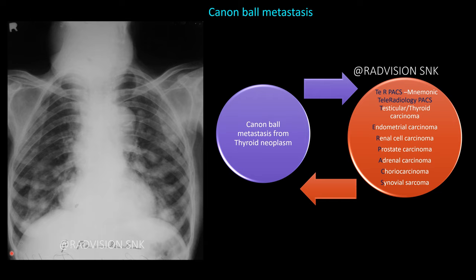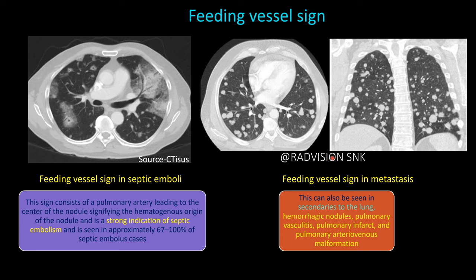Next case: multiple nodular lesions scattered in bilateral lung fields — these are called cannonball metastases. There is also a thyroid mass with calcifications, indicating thyroid malignancy with cannonball metastasis. Remember the mnemonic 'Tele Radiology PACS': T for testicular and thyroid carcinoma, E for endometrial carcinoma, R for renal carcinoma, P for prostate carcinoma, A for adrenal carcinoma, C for choriocarcinoma, and S for synovial sarcoma.